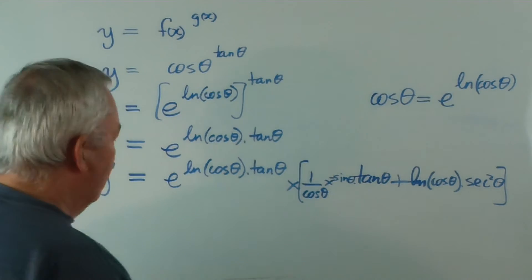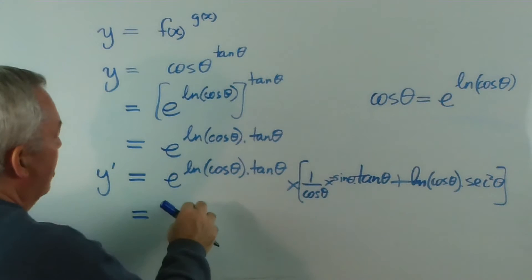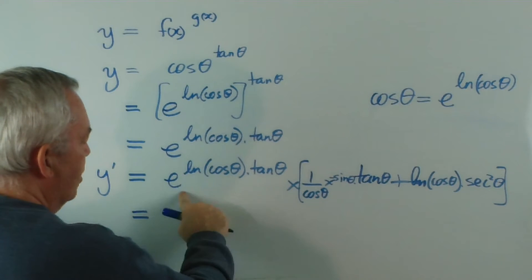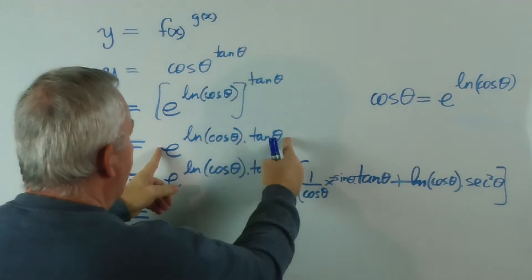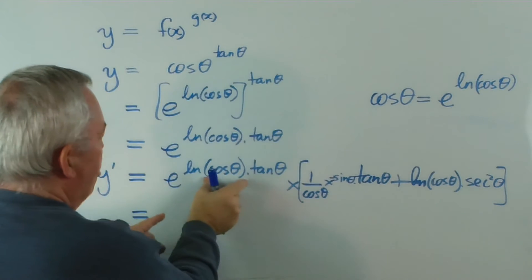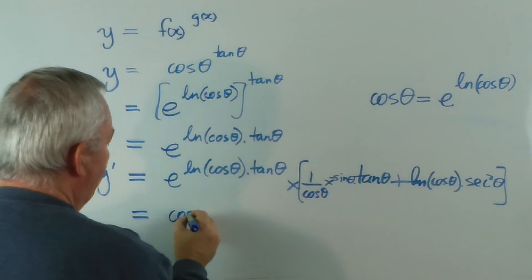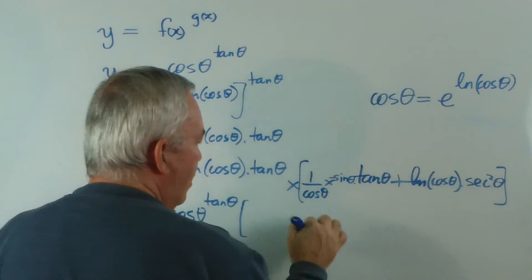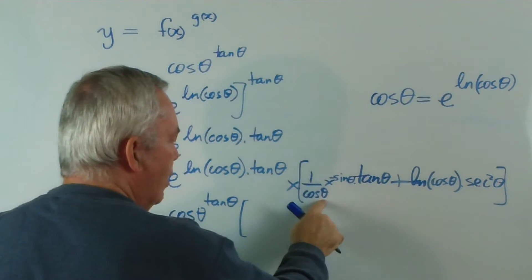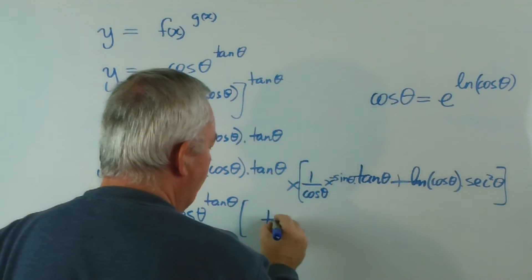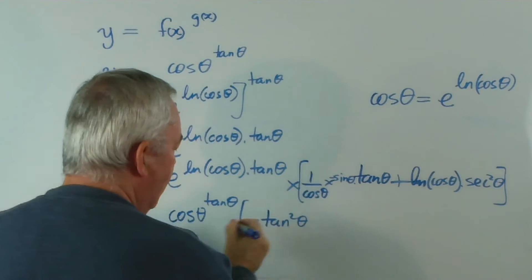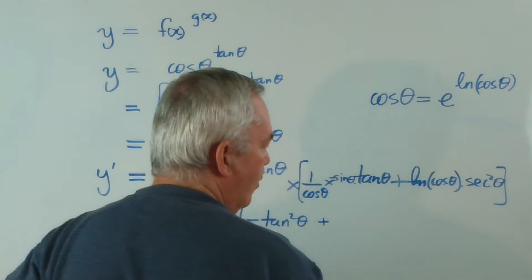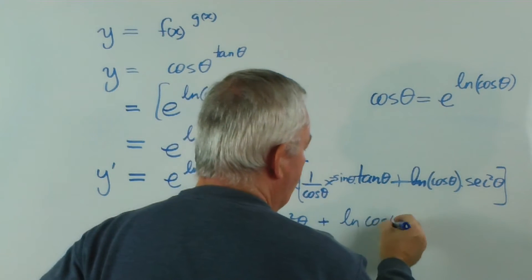This is quite a complicated-looking piece of work. Remember that the exponential to the logarithm of cos θ is equal to cos θ, because those expressions are the same. We can change this back to cos θ to the power tan θ. In the product, sin over cos will be tan, giving negative tan²θ, plus sec²θ times log cos θ.